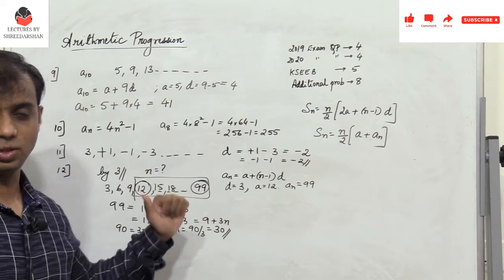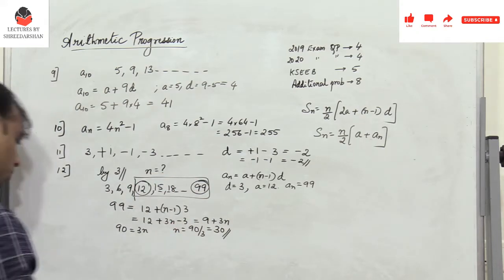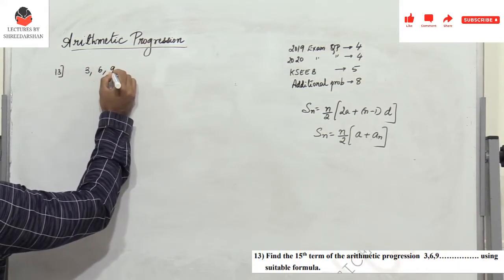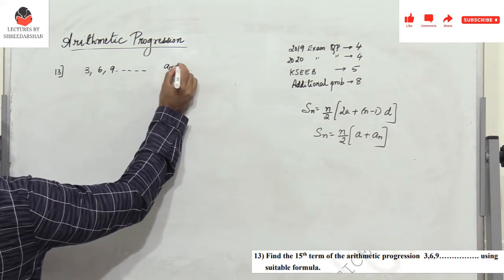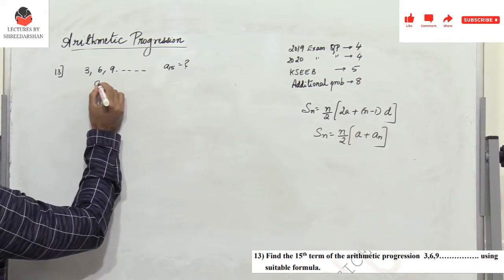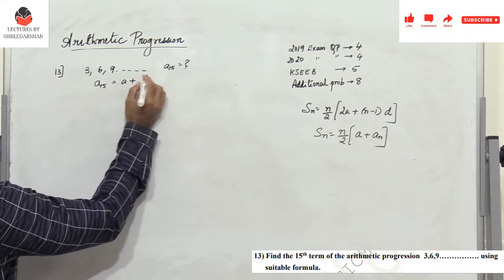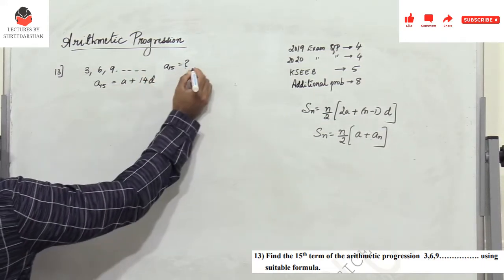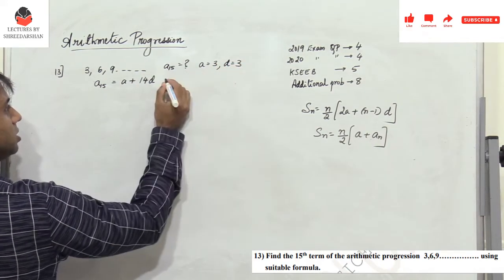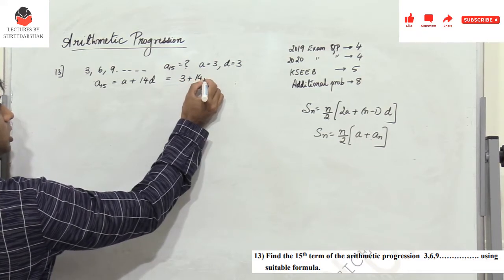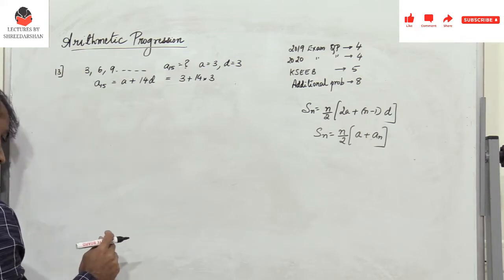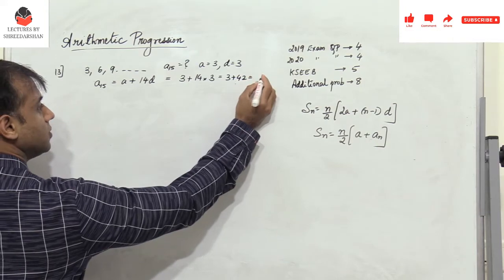Problem 13: for the arithmetic progression 3, 6, 9, ..., find a₁₅. Using a₁₅ = a + 14d with a = 3 and d = 3: a₁₅ = 3 + 14 × 3 = 3 + 42 = 45.